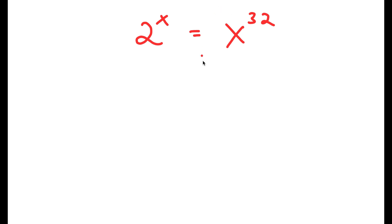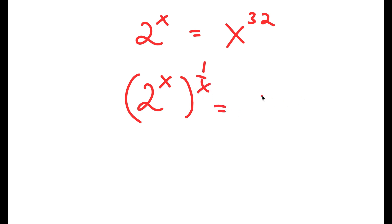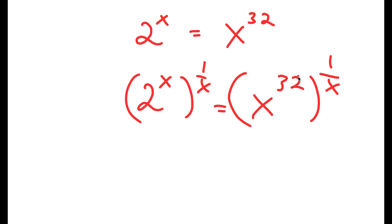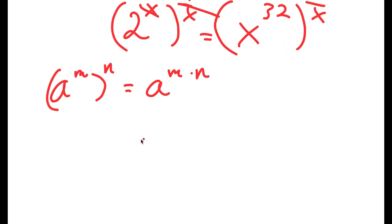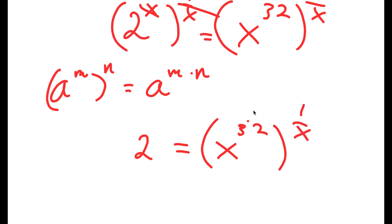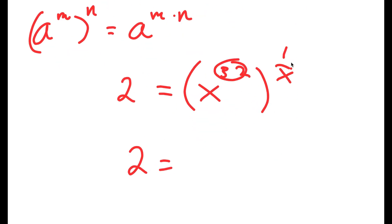To solve this, I'm going to first start by rewriting this as 2 to the power of x to the power of 1 over x is equal to x to the power of 32 to the power of 1 over x. If I have something in the form a to the power of m to the power of n, this is equal to a to the power of m times n. So this x and 1 over x cancel out, and I'm left with 2 is equal to x to the power of 32 over x.